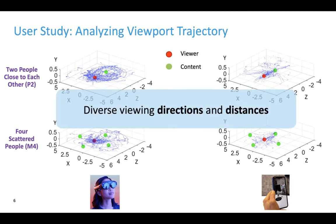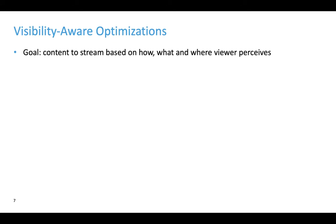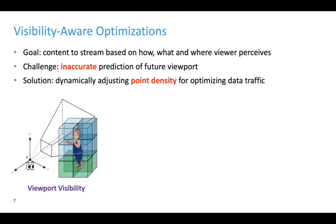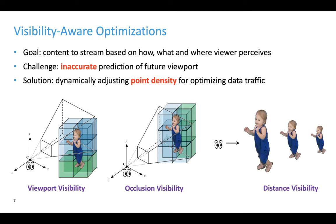The two plots on the right are for smartphone users. The viewport trajectory depends on not only the display device but also the video content. The trajectory is more smooth for headset users than smartphone users. The key observation is that viewers did watch the displayed content from different angles and at different distances. Based on these observations, we proposed three visibility-aware optimizations for Vivo. At a high level, if we can predict how users move, we can determine video content to fetch. However, viewport prediction may not always be accurate, so we proposed a conservative solution that dynamically changes point density of a to-be-fetched cell.